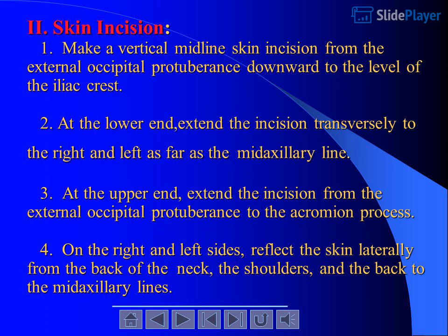Skin incision: 1. Make a vertical midline skin incision from the external occipital protuberance downward to the level of the iliac crest. 2. At the lower end, extend the incision transversely to the right and left as far as the midaxillary line. 3. At the upper end, extend the incision from the external occipital protuberance to the acromion process. 4. On the right and left sides, reflect the skin laterally from the back of the neck, the shoulders, and the back to the midaxillary lines.